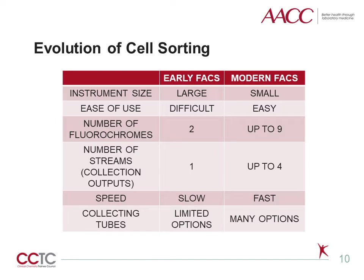FACs instruments have improved immensely since BD's FACS-1 was launched in the 1970s. Early FACS instruments were very large, with cumbersome and time-consuming startup. Sorts were limited to forward and side-scatter characteristics and two fluorescent channels, running at only around 1,000 to 2,000 cells per second, with limited options for sample and collection tubes. Modern sorters are much smaller, and even benchtop models are available. The setup is automated, with most models having beads that enable optimization of the fluidics, drop delay, vibration frequency, and side streams. Advancements in optics allow up to nine color setups, up to four populations sorted at once, sorting rates around 10,000 events per second, and multiple options for sample and collection tubes and plates.